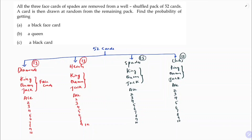Now reading the question: all three face cards of spades are removed. So from spades, king, queen, and jack are removed. These three circled cards are removed. Now what is the probability of getting a black face card? Out of total 52 cards, three cards are removed, so now we have 49 cards.